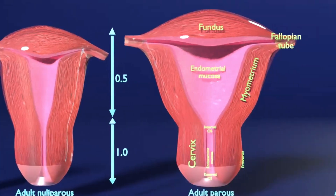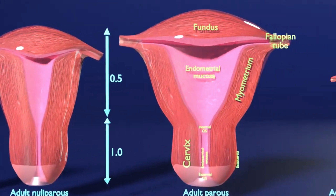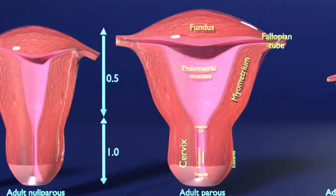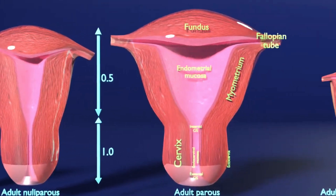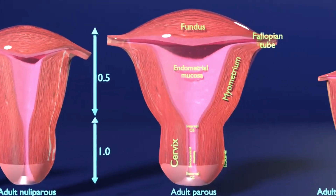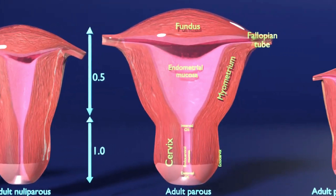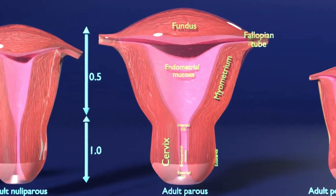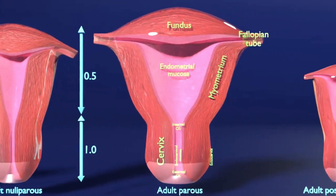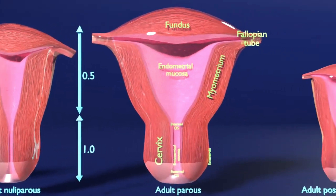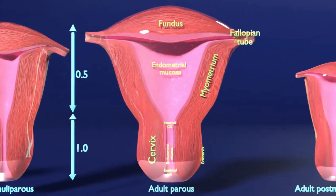In this view of the adult parous uterus, the parts of the uterus can be seen. The fundus is the uppermost rounded portion of the uterus — the broad curved upper area where the fallopian tubes connect. The fallopian tubes, also known as the uterine tubes or salpinges, stretch from the ovaries to the uterus. The cervix is the lower part of the uterus, usually 2 to 3 cm long and roughly cylindrical in shape. The narrow central cervical canal runs along its entire length, connecting the uterine cavity and the lumen of the vagina. The opening into the uterus is called the internal os, and the opening into the vagina is called the external os.